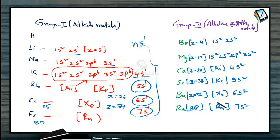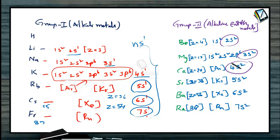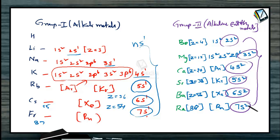The valence electronic configuration of all Group 2 elements is ns2. For beryllium it is 2s2, magnesium 3s2, calcium 4s2, strontium 5s2, barium 6s2, and radium 7s2. Here, N indicates the period number, which is the same principle applied to both Group 1 and Group 2.